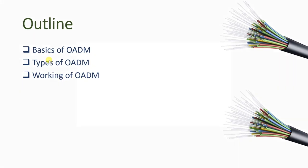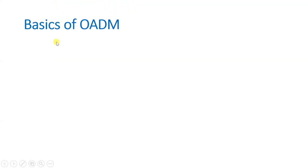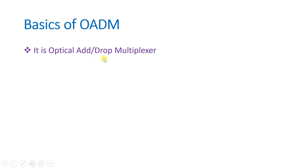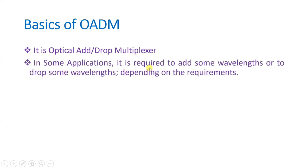Let us begin with the first agenda — basics of OADM. OADM means Optical Add-Drop Multiplexer, which we use to add or drop any wavelength in between a network. If you need to add some signal in between the network we can do that, or if receivers want to receive a particular wavelength in between the network, we can use OADM to take or add wavelength. In some applications it is required to add or drop wavelength depending on the requirements.